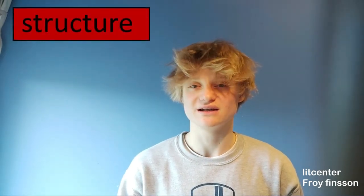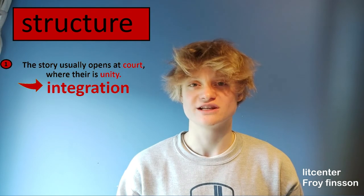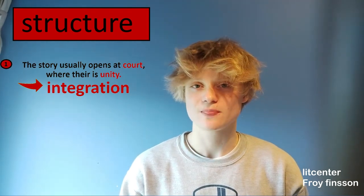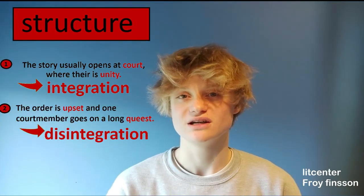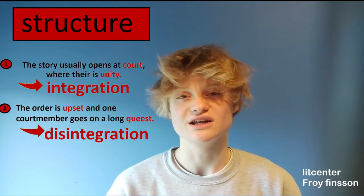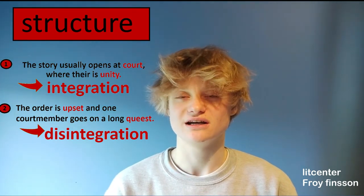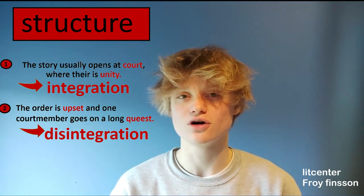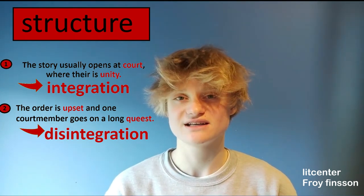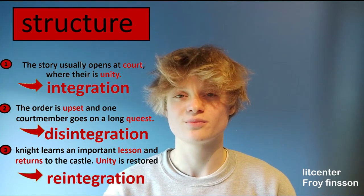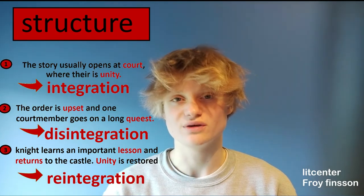A romance is usually comprised of 3 parts, and we can also find them in Sir Gawain and the Green Knight. The story normally opens at the court where there is unity and everything is alright — that's what we call the state of integration. But then something happens to disrupt unity; in this case, the Green Knight comes in. The order is upset and we move into the second part, the state of disintegration. Usually one court member goes on a long quest, and while he is exiled, he also undergoes a psychological evolution. Then there is a third part at the end of the poem: the knight returns home and unity is restored.